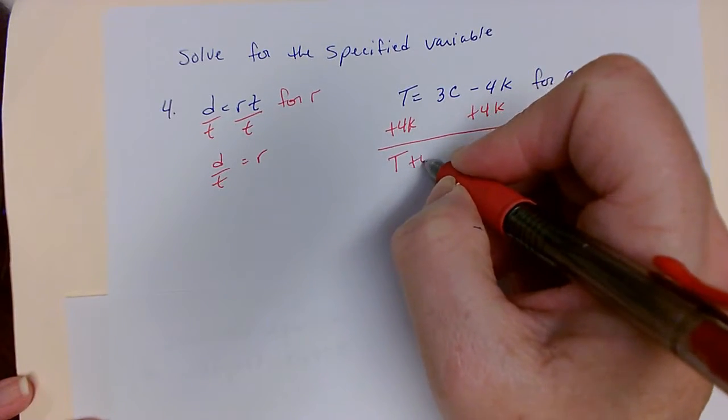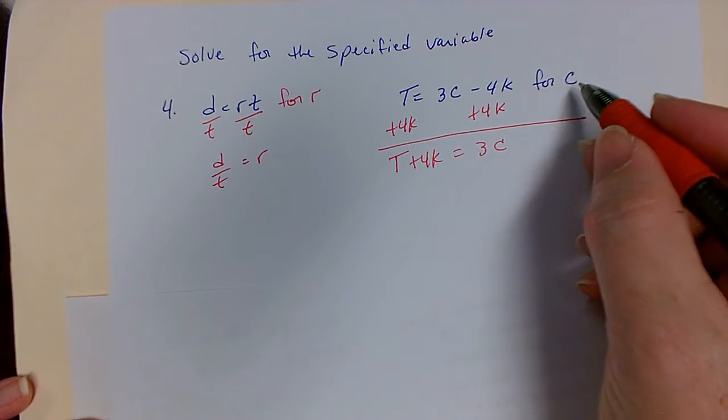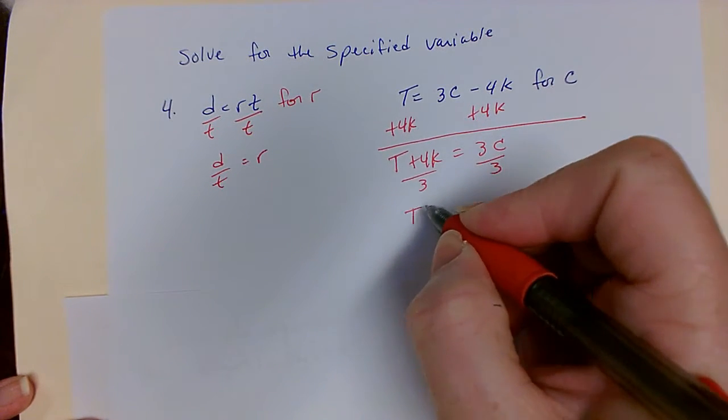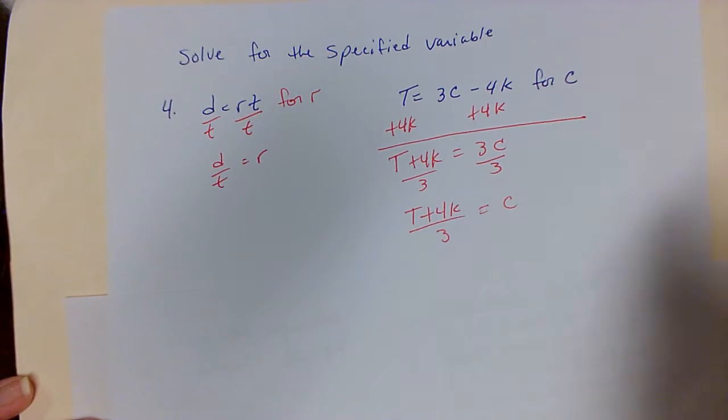That gives me t plus 4k equals 3 times c. Now I'll solve for c by dividing by 3. So t plus 4k over 3 equals c.